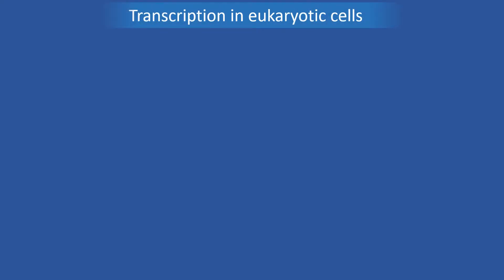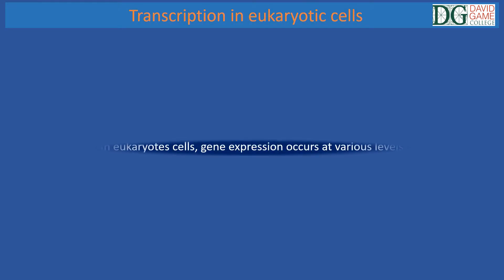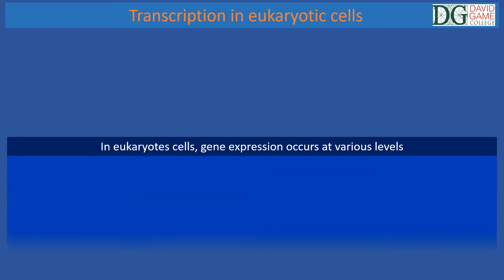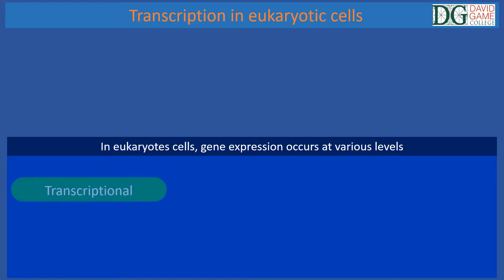Now let's focus on transcription in eukaryotic cells. In order to facilitate understanding, I have simplified the concepts and graphics. In eukaryotic cells, gene expression occurs at various levels, including transcriptional, which determines the rate at which genes are transcribed.